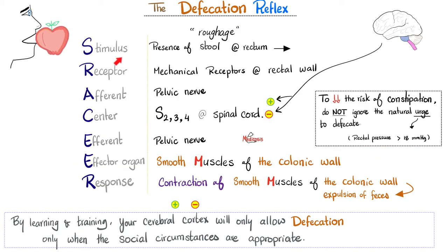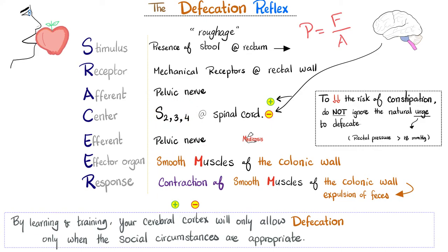What's the stimulus for the defecation reflex? The presence of stool in your rectum causing rectal distension. Pressure equals force over area — the more stool reaches your rectum, the greater the force, the higher the pressure, which stretches the wall and tugs upon mechanical receptors. They tell the pelvic nerve to signal S2, 3, 4 segments of your spinal cord that you need to poop. The efferent is still the pelvic nerve, going back to your colon and rectum. The effector organ is the smooth muscles of the rectal wall — response: contraction and expulsion of feces.